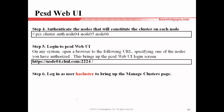Step four: authenticate the nodes that will constitute the cluster on each cluster node. In my case, I will create a cluster service with three cluster nodes: node 4, node 5, and node 6. We need to authenticate these cluster nodes. In step three, I already explained how to give the password for HA cluster. This will authorize the cluster nodes.